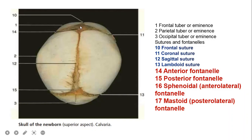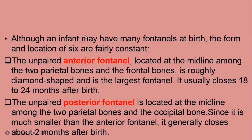The anterior fontanelle, part labeled 14, is located at the midline among the two parietal bones and the frontal bones. It is roughly diamond shaped and it's the largest fontanelle. It usually closes at 18 to 24 months after birth. The unpaired posterior fontanelle is located at the midline among the two parietal bones and the occipital bone, and since it's much smaller than the anterior fontanelle, it generally closes about two months after birth.